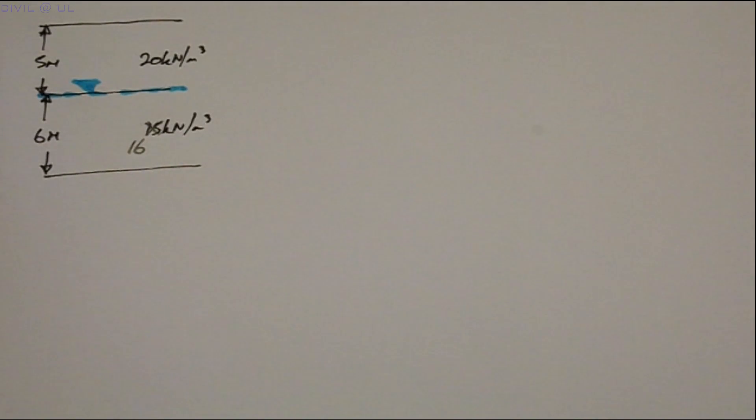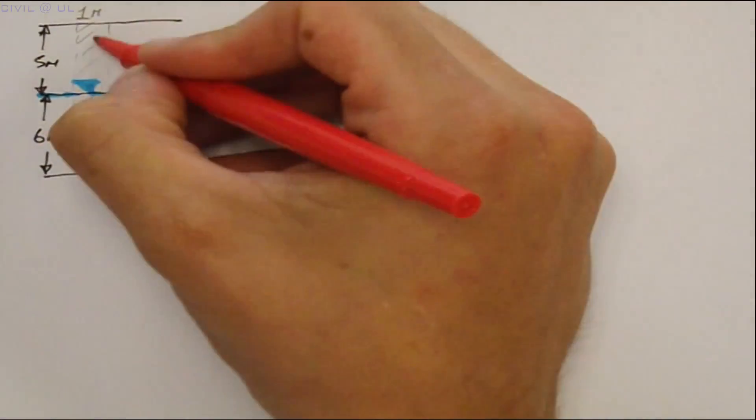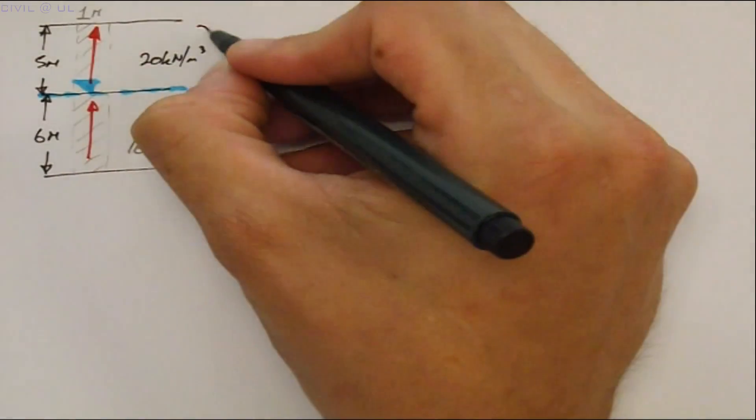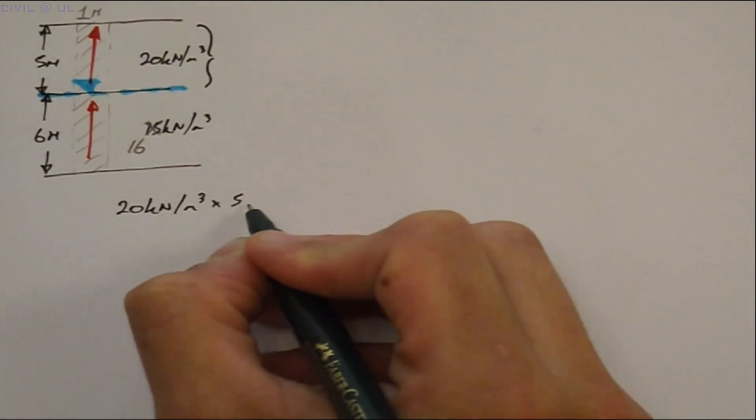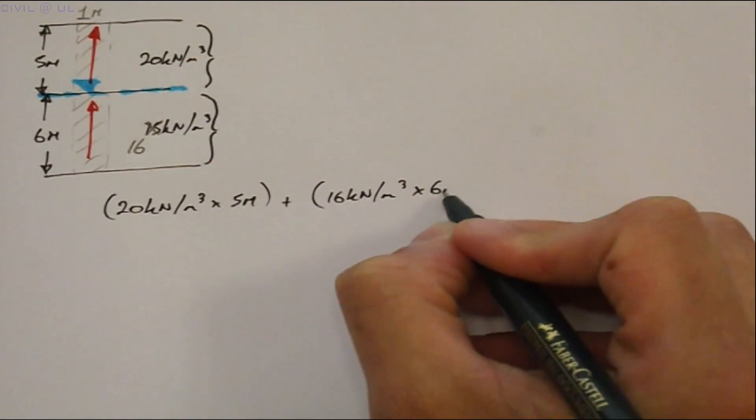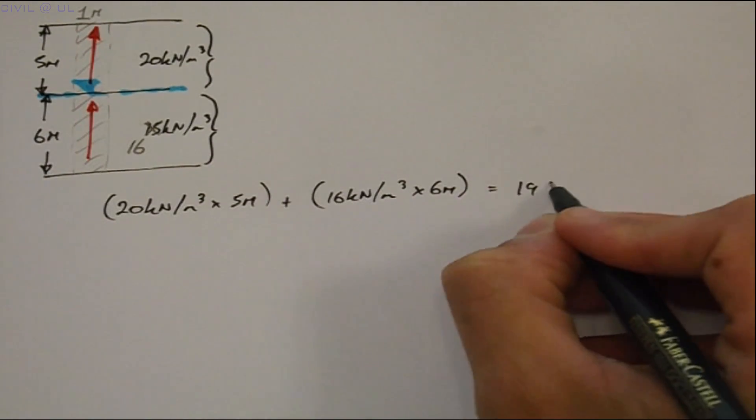Starting again with the total stress we have to lift all of the soil above the location of interest which is the bottom of strata two in this case. For strata one we've got 20 kilonewtons per meter cubed times 5 meters plus 16 times 6 for strata two giving a total stress of 196 kPa.